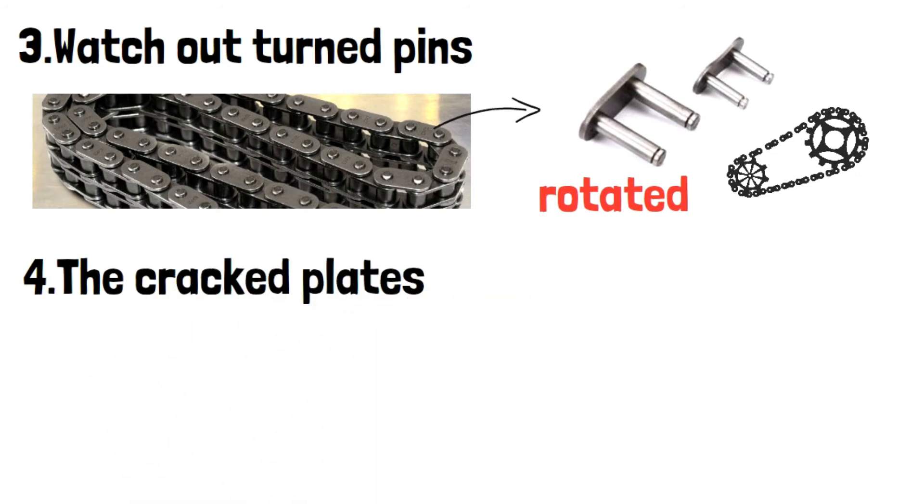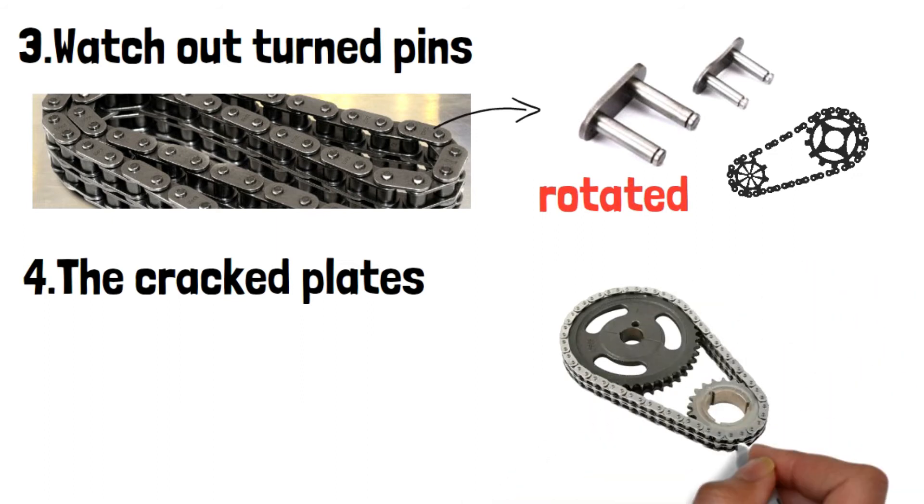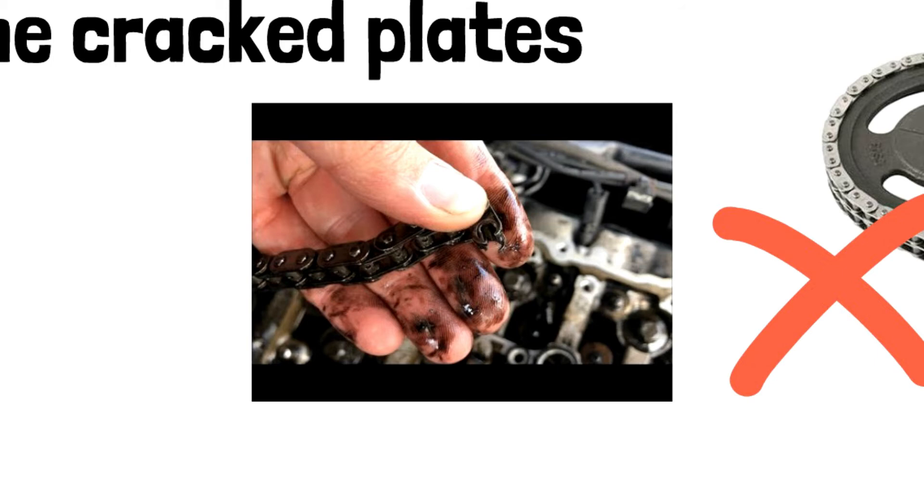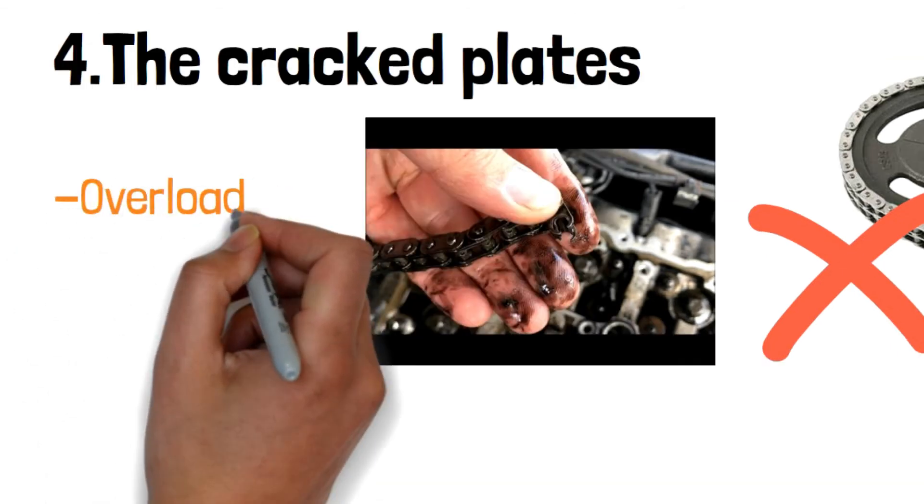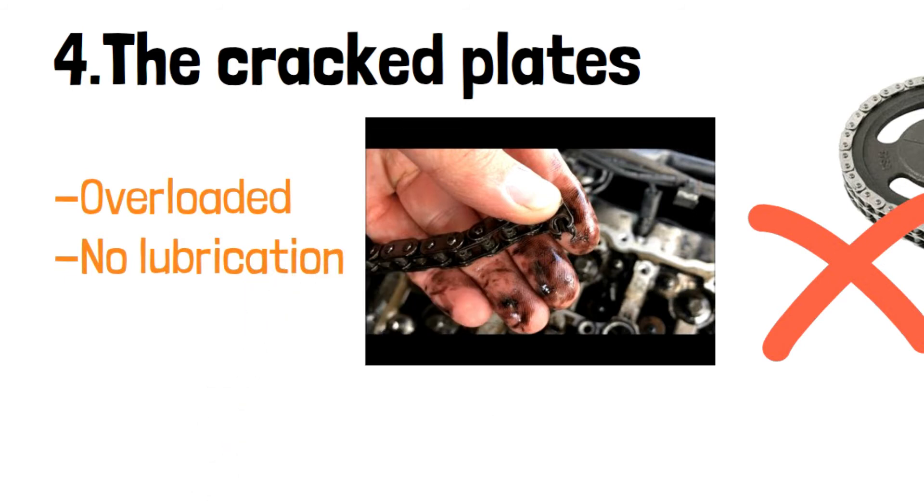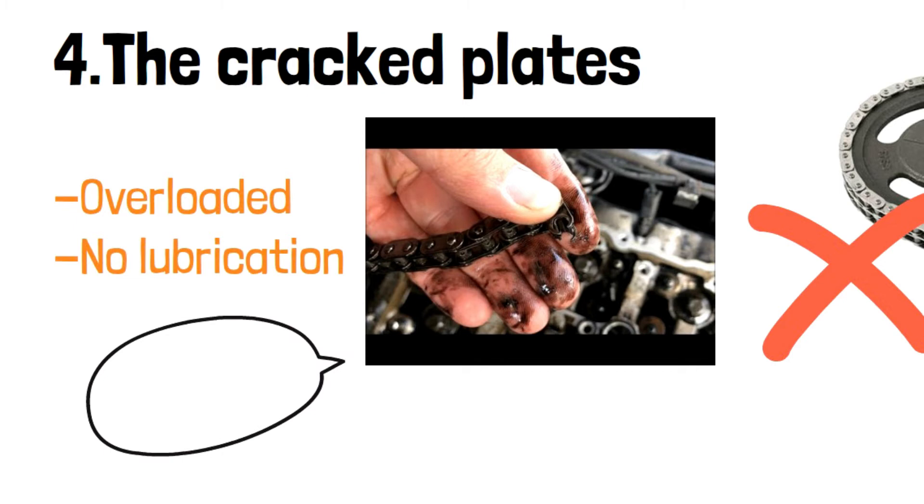Number four: the cracked plate. Any abnormal conditions on the plate like fractures or cracks is not acceptable. When the chain is overloaded or exposed to the corrosion environment, the chain cracks. Or as we just mentioned, if the chain doesn't have sufficient lubrication, it cracks too. Then it's telling you it is the time for timing chain replacement.